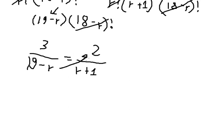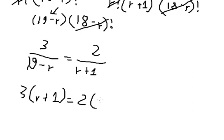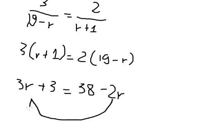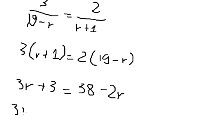We cross-multiply: moving terms to the left and right — 3 times r plus 1 equals 2 times 19 minus r, giving us 3r plus 3 equals 38 minus 2r.